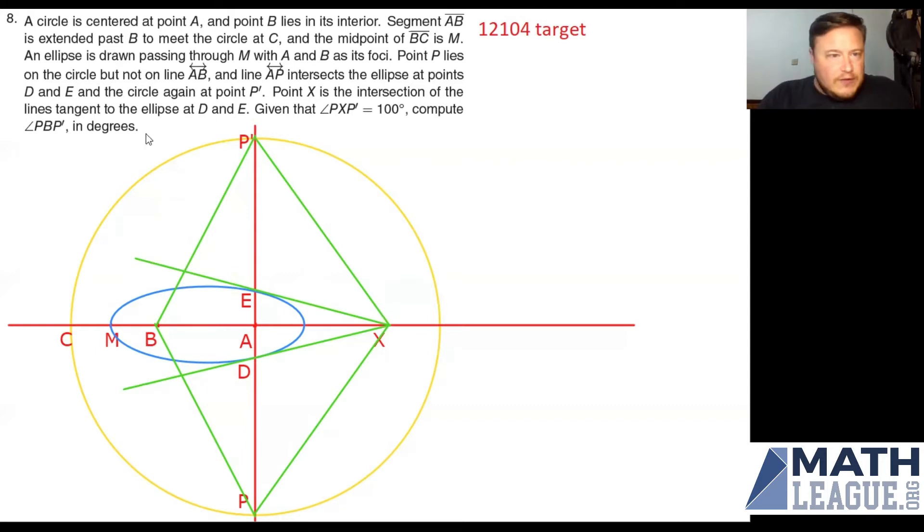X is the intersection of lines tangent to the ellipse. So what I did now is I drew my tangents to the ellipse at E and D and I let them intersect at X. Now by the symmetry of this thing, the fact that I drew these two red lines at right angles, X is going to have to lie on this horizontal red line. I hope you can see why that worked based on the symmetry of the problem.